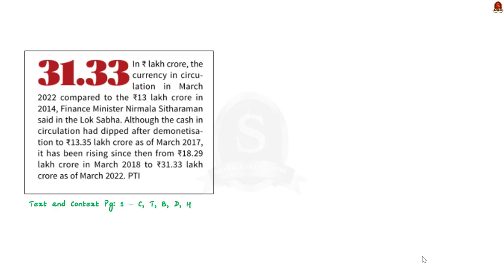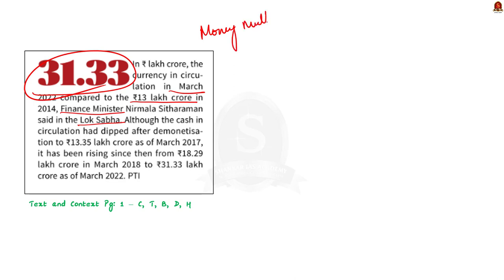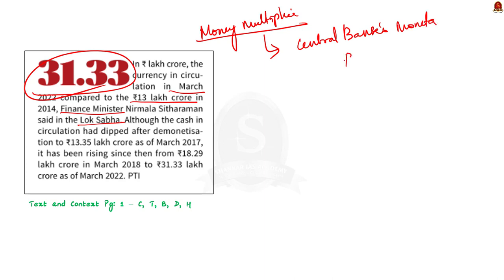This article says that currency in circulation in India as of March 2022 is 31.33 lakh crore. In March 2014, the currency in circulation was 13 lakh crore. This data was presented by our finance minister in Lok Sabha. So in this context, we will revise the concept of money multiplier. Money multiplier refers to the mechanism through which the central bank's monetary policy actions impact the money supply in the economy. In India's context, it is the RBI's monetary policy.